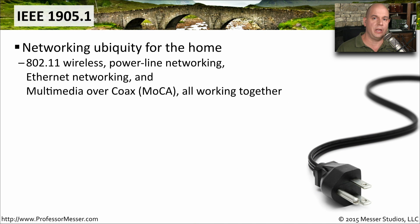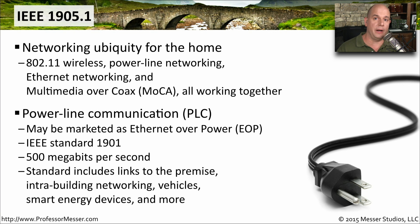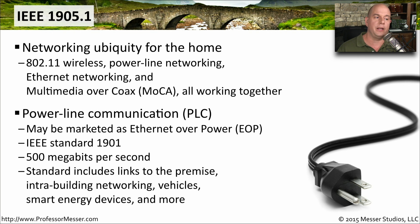Ethernet networks in our homes come in many different flavors: wired Ethernet, 802.11 wireless, power line networking (an IEEE standard), and multimedia over coax. To bring all of these together as a single Ethernet network, a new IEEE standard called 1905.1 was created. The power line networking component is its own separate IEEE standard called 1901, also referred to as Ethernet over Power, or EOP. It runs at 500 megabits per second and connects different devices within a premises — including vehicles and smart devices — using existing power lines.